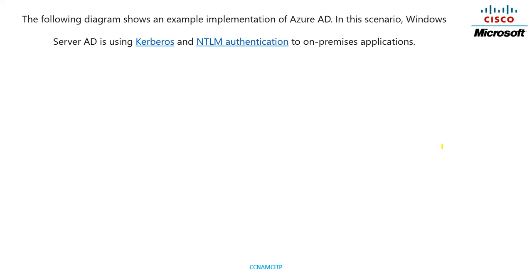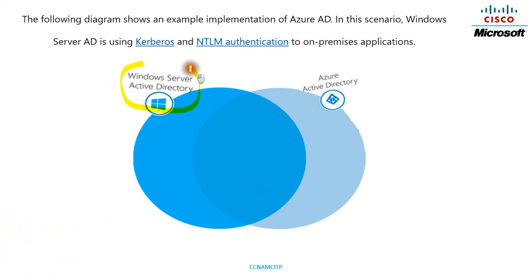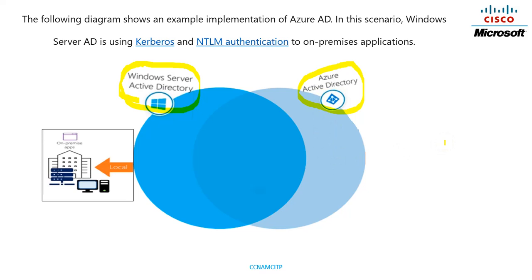Looking at a diagram, Windows Server AD uses Kerberos and NTLM authentication for on-premises applications. In the diagram, you can see two parts highlighted in different colors: the dark blue part represents Windows Server Active Directory, and the other part represents Azure Active Directory. The Windows OS icon represents the on-premises side, and the Azure AD icon represents the cloud side.